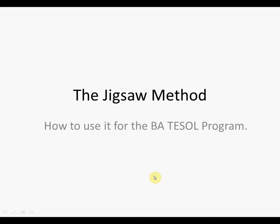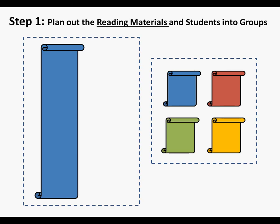How to use the jigsaw method specifically for the BA TESOL program. Step 1: plan out the reading materials and students into groups. Grab the reading materials from the mini library of the course. You will either have a long textbook, many small articles, or both.